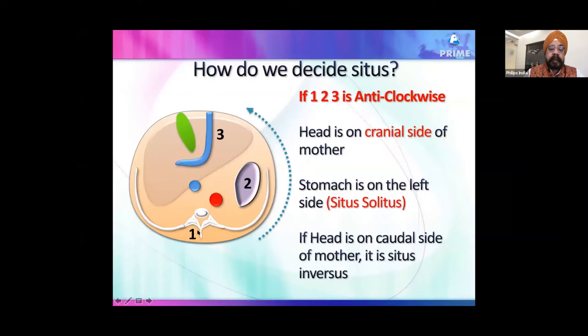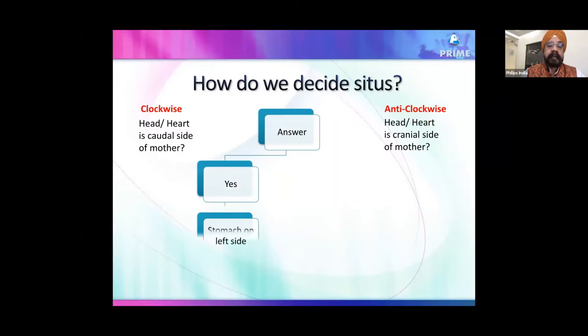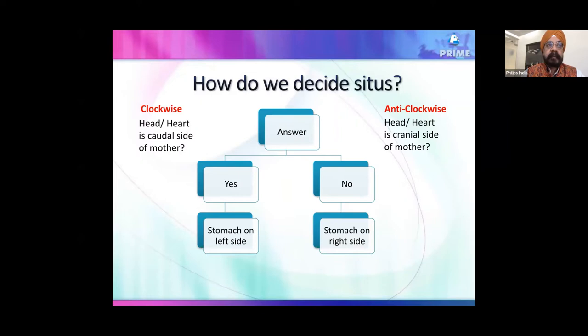Anticlockwise rule: if the spine, aorta, umbilical vein, and stomach are in an anticlockwise position and the head is cranial, the stomach is on the left side — normal. If the head is caudal in this orientation, that means situs inversus. This is how you diagnose situs inversus totalis or mirror image dextrocardia.